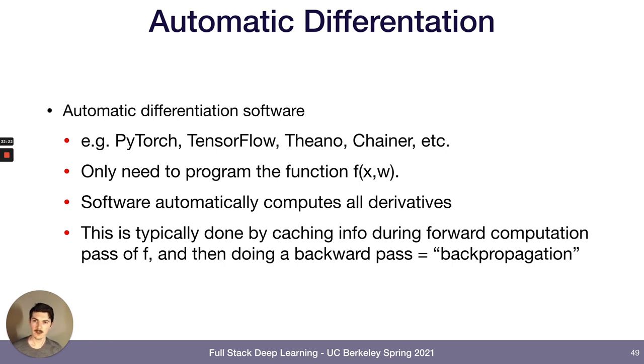All right. And the good news is that we don't have to even code up the derivatives ourselves, because we use automatic differentiation software. So that's like PyTorch or TensorFlow, or basically anything else you're likely to see, will compute the gradients for you. So all you need to do is just program the forward function, like f of x, given weights w, and then PyTorch will automatically compute the gradients for you.